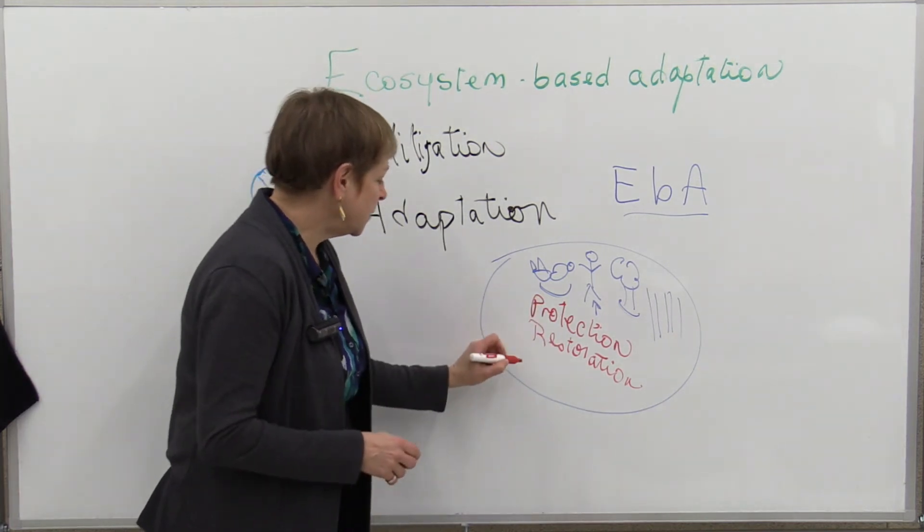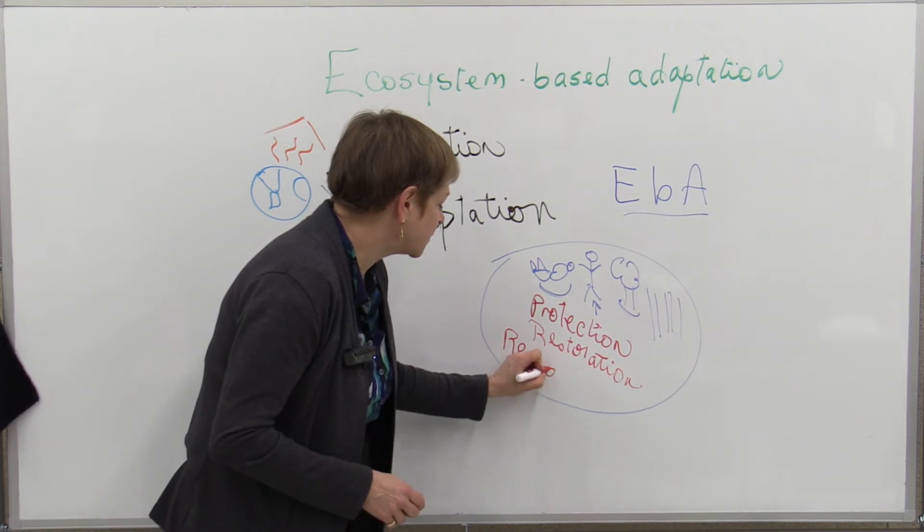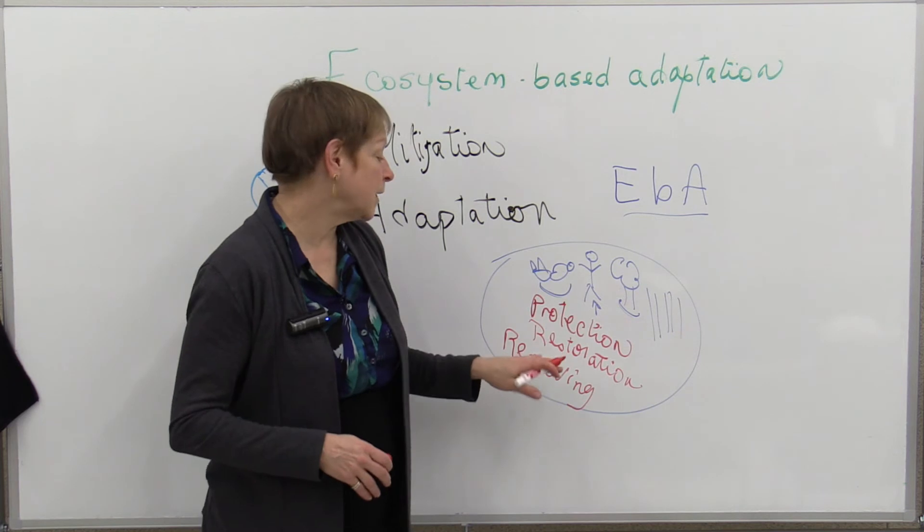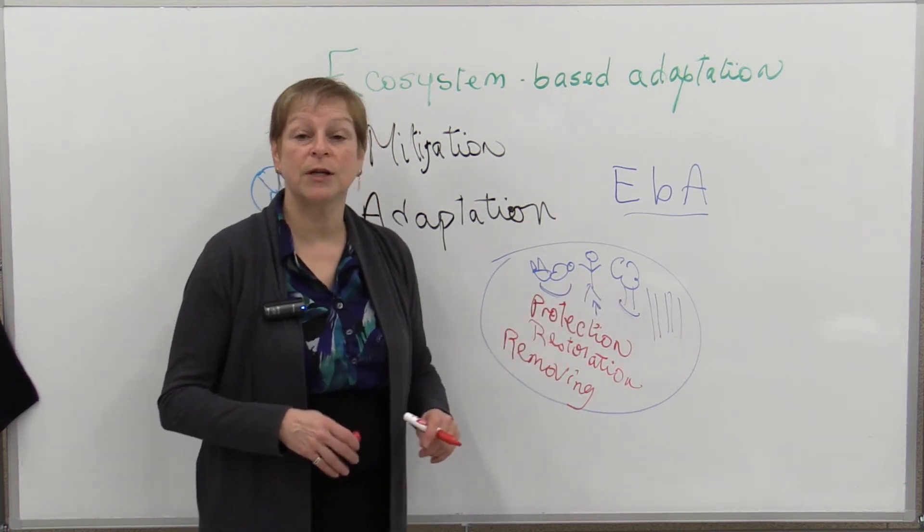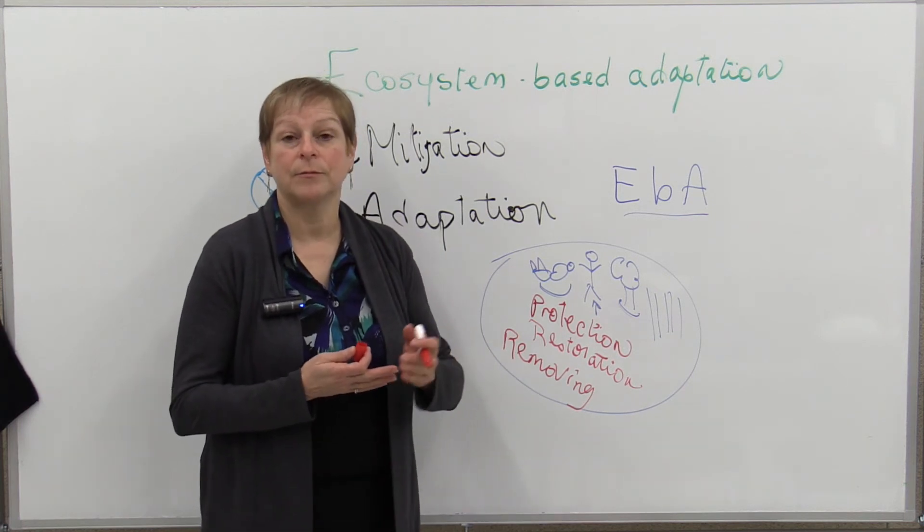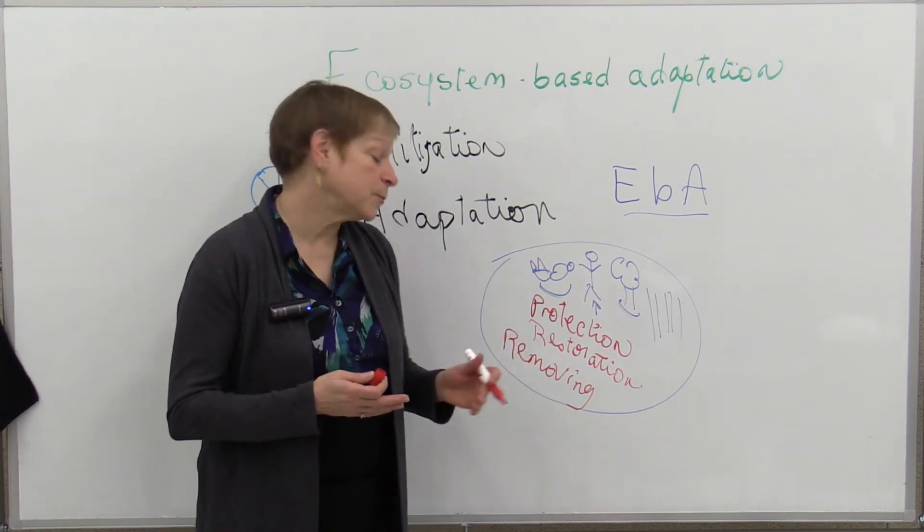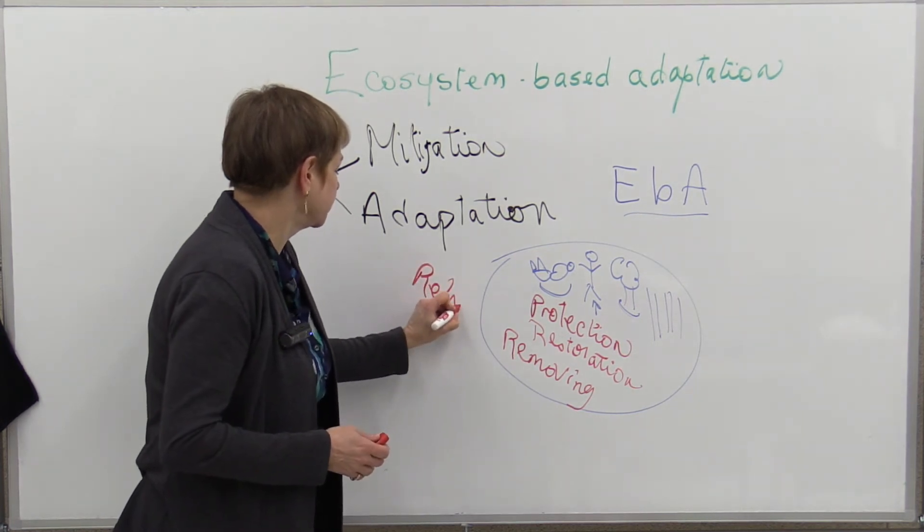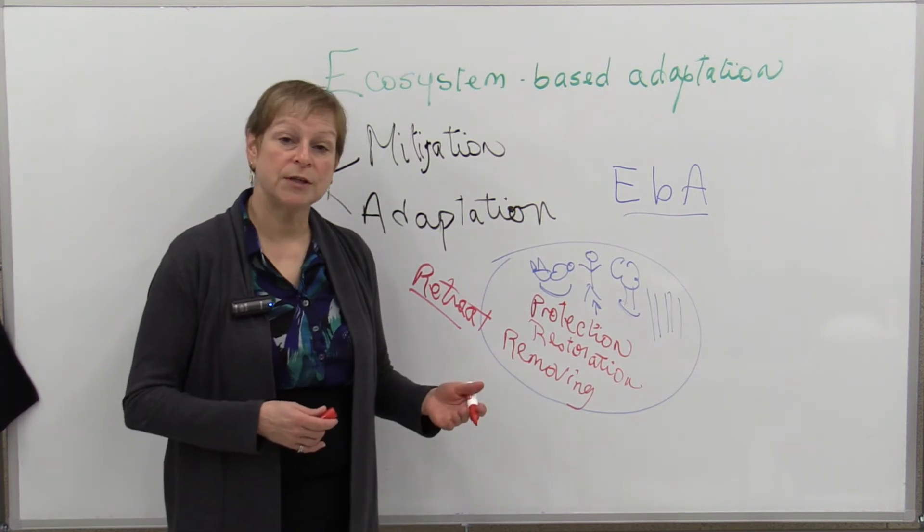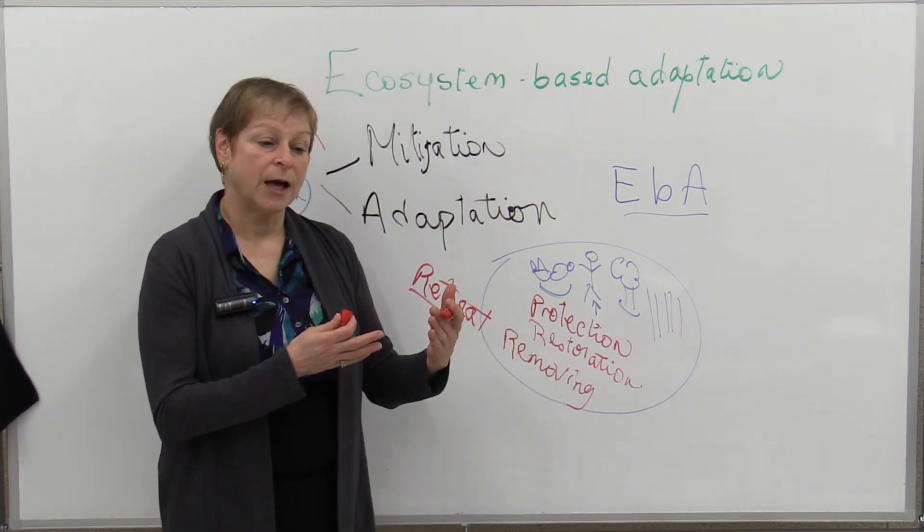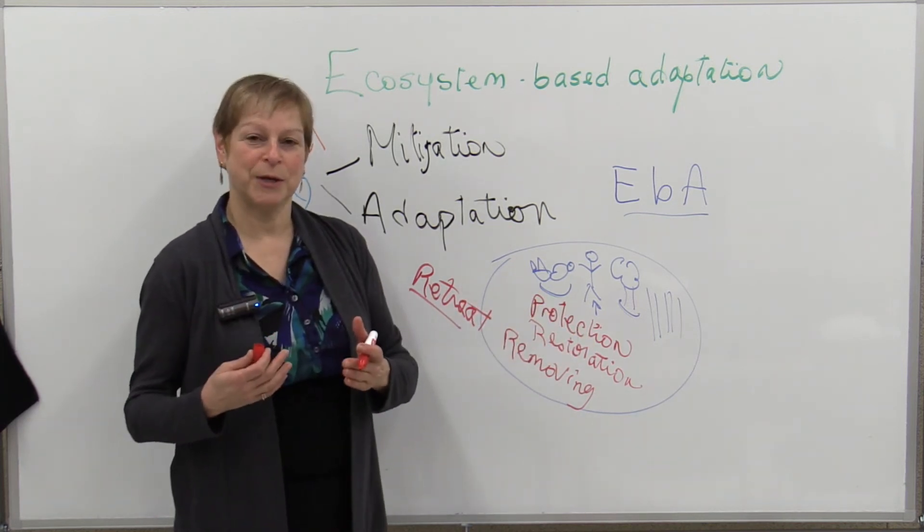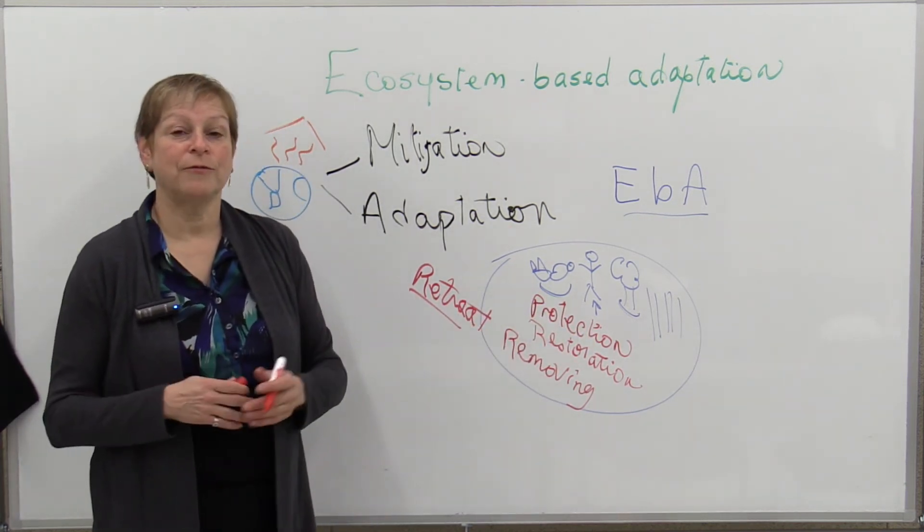In some cases, it may be a question also of removing some threats or some issues. And that can be especially in terms of human infrastructure that are probably stopping the migration of some natural ecosystems. It may be also in terms of retreat. And this is something that is especially important for coastal communities where you have sea level rise. And at one point, the house either will stay in the water or will have to be moved to be still functional for the communities.